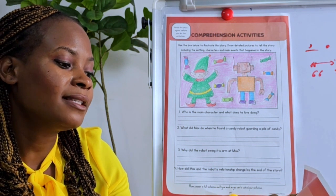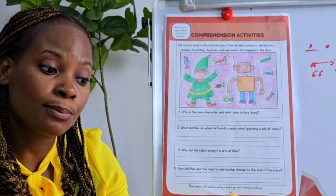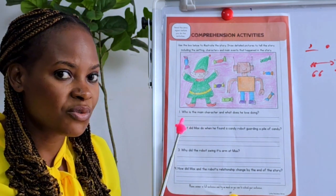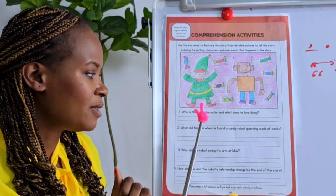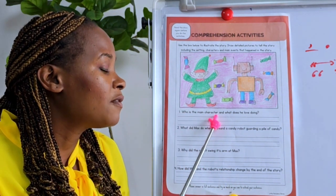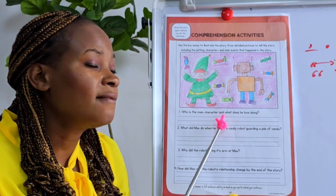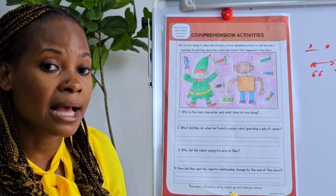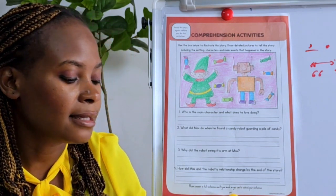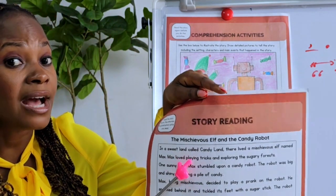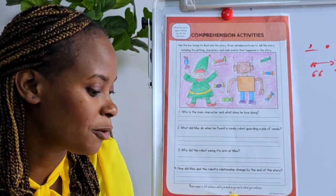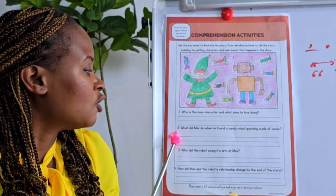He loves playing tricks and exploring sugary forests. I'm not going to write because it's very tricky from this angle, but I would answer this question as: Max is the main character of the story and he loves to play tricks and explore sugary forests. Your answers are coming from that story — go back and read again if you're not sure. Question two says: